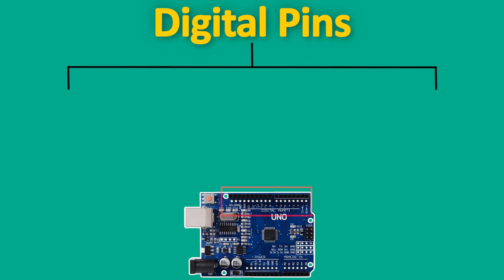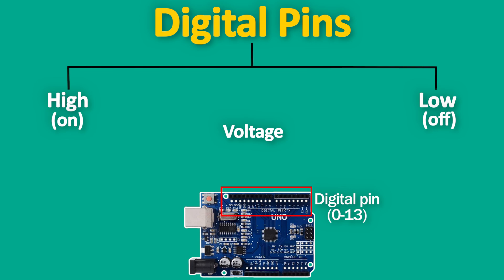Understanding how these pins work is crucial for building projects with your Arduino. Let's talk about digital pins. Digital, as the name suggests, refers to two states which can be high or low, on or off, or in terms of voltage, especially in case of electronic components, it is 0 and 5 volts. They are perfect for tasks like turning LEDs on and off, reading button presses, or controlling digital devices.